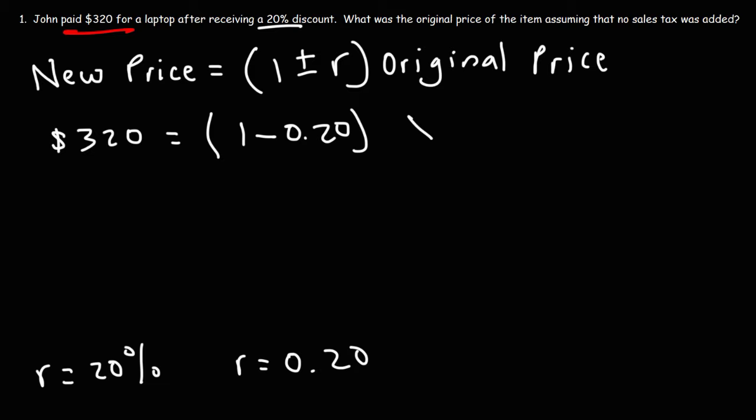The original price, we don't know what it is, so we're going to call it X. So 1 minus 0.20 is 0.80. So what this means is that after receiving a 20% discount, the new price is 80% of the original price.